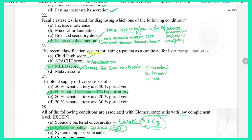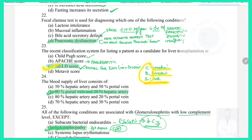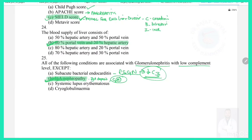Question 23: A recent classification system used for liver transplantation candidacy — earlier the Child-Pugh score was used, but nowadays the MELD score is used, which includes creatinine, bilirubin, and INR. Question 24: Blood supply of the liver consists of 80% from the portal vein and 20% from the hepatic artery.